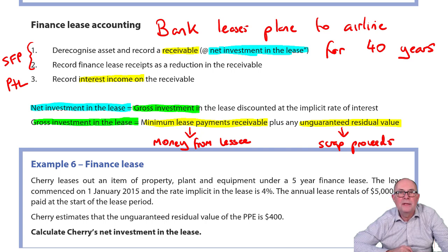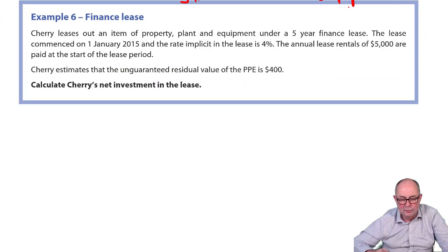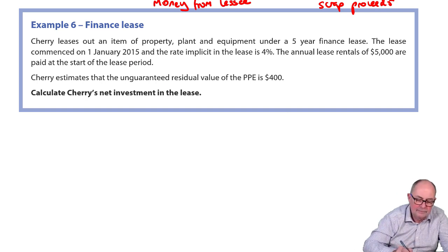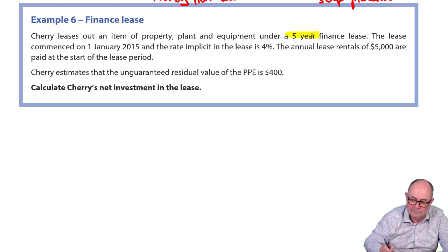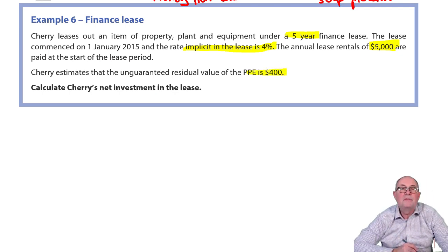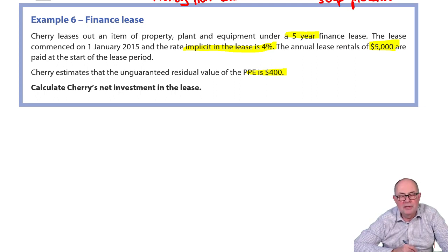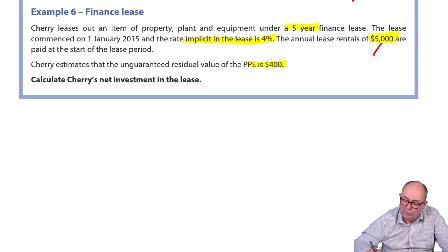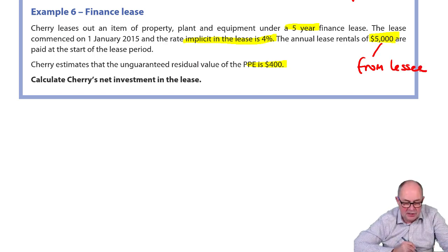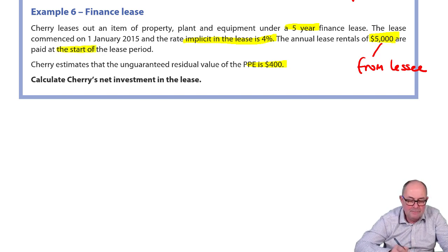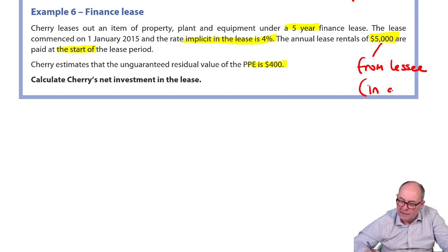We're going to have a look at an example. That's example six. If you need to, pause the recording while you read the example. The first paragraph is telling us what will be received from the lessee. So, the annual rentals of 5000 are coming from the lessee. Notice it says the first one is paid at the start of the period. So, that means these payments are paid in advance.